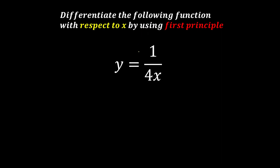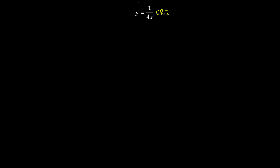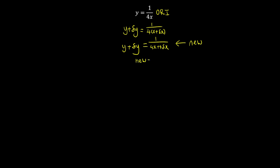Let us differentiate the function by using the first principle. First, we have the original function. We're going to apply the small change in y and the small change in x. Since we have a bracket here, we'll expand it first so it's easier to work with later on. After expanding, we apply the delta changes and then do simultaneous — new equation minus the original. So we have y plus delta y minus y, and 1 over (4x plus 4·delta x) minus 1 over 4x.